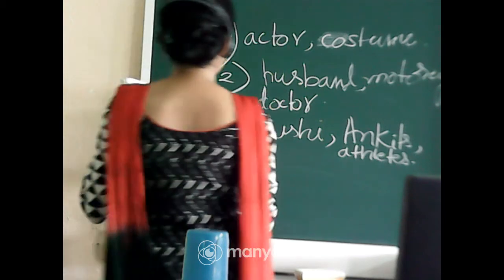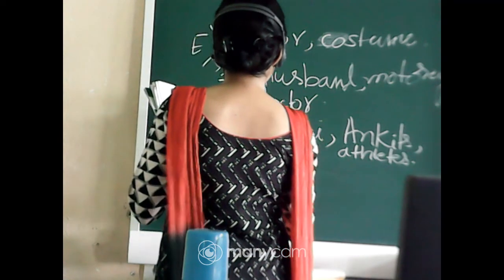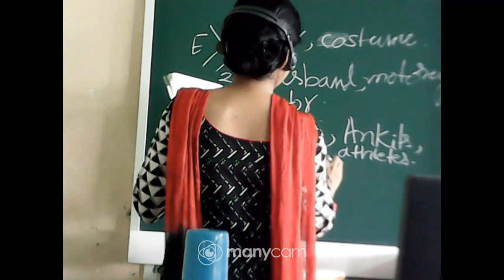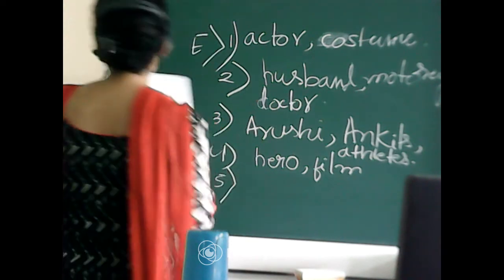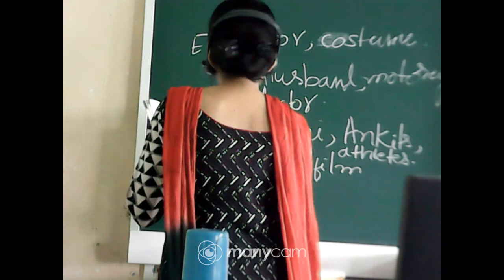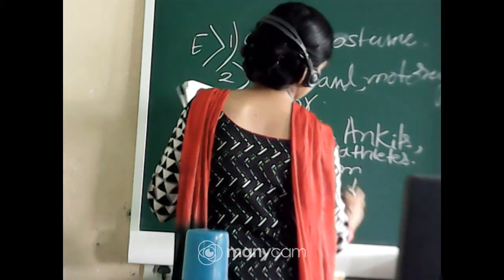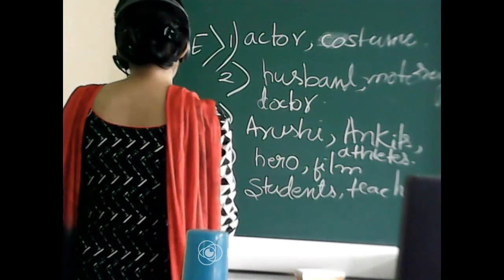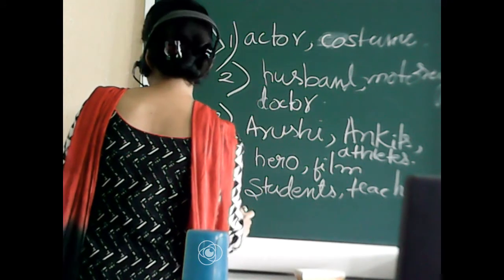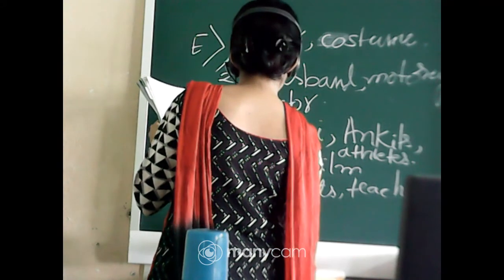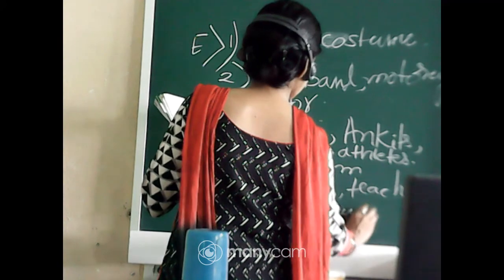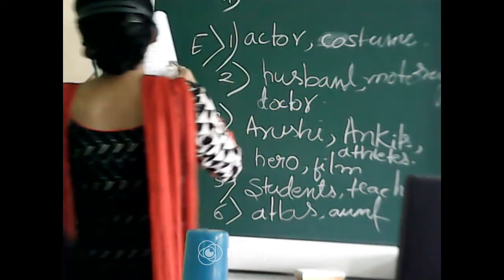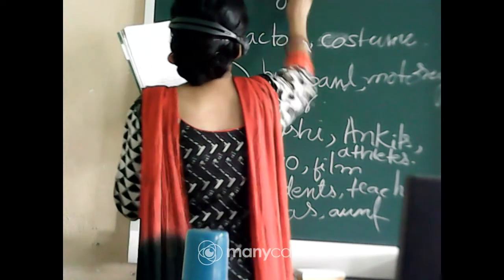Number 4: 'Who is the hero of this film?' Hero and film will both be underlined. Number 5: Students and teachers. Number 6: Tiger, tigress, and tree — all will be underlined.